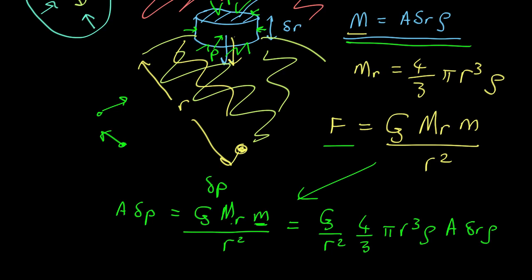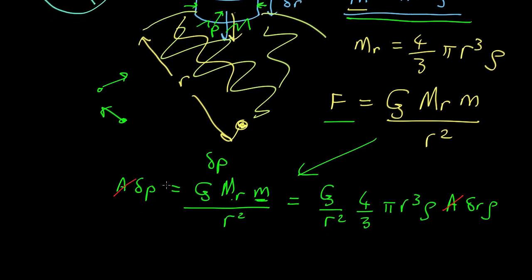So what we can see is that we have an area on both sides that cancels out. So we've got the pressure, the difference in pressure, and the difference in radius here. So we've got two small changes. We take the ratio. That's what you do in calculus. So you get dP by dR.